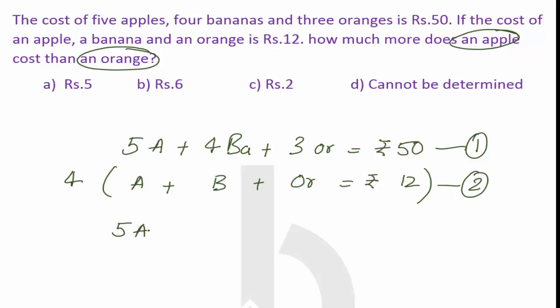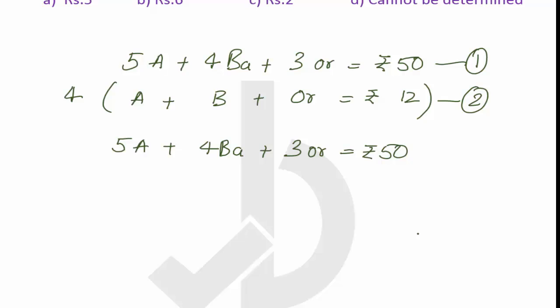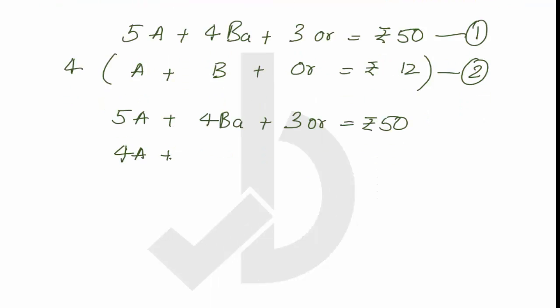That is 5A plus 4Ba plus 3 oranges is Rs.50, whereas 4 apples plus 4 bananas and 4 oranges. You have to multiply this 4 with this 12 as well. It gives you Rs.48.